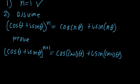So cosine theta plus i sine theta raised to the n plus 1 power is equal to cosine of n plus 1 theta plus i times sine of n plus 1 times theta.